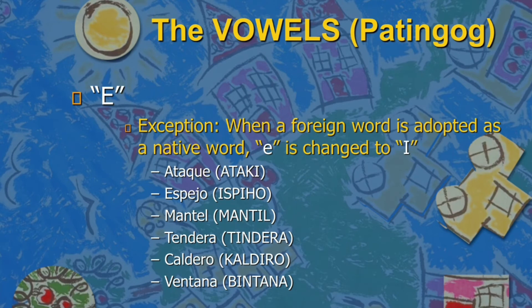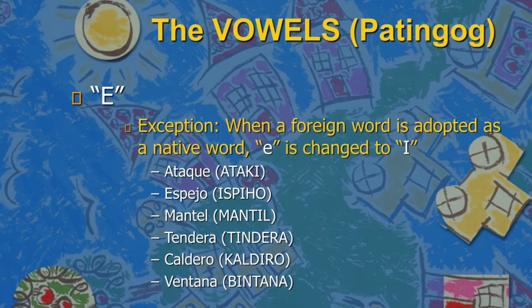Another exception: when a foreign word is adopted as a native word, E is changed to I. So the spelling changes — like atake, espiho, mantil, tindera, kaldero, bintana. Originally these words are not native words, but they have existed for a very long time. Espiho refers to salamin — mirror. And mantil is a tablecloth. Those are Spanish words, but we adapted them, so they became Bisaya words with I instead of E.